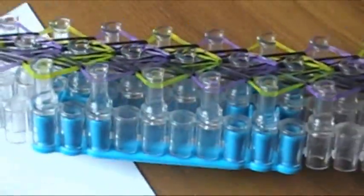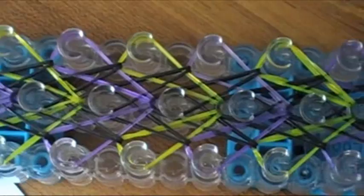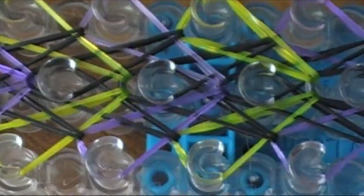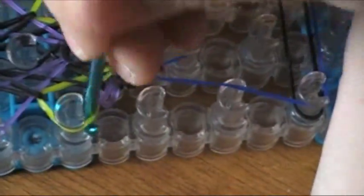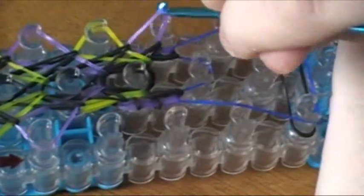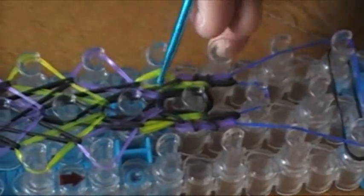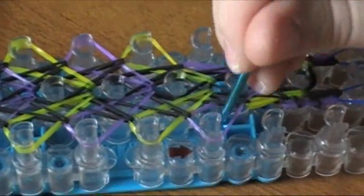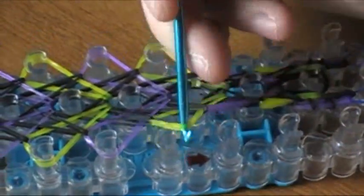Now again, I'm going to look underneath and make sure there's no bands hanging out on the bottom, and we're going to start to undo the bracelet. I started the sides first because there is so much tension, and I'm just going to gently take them off the side pegs.